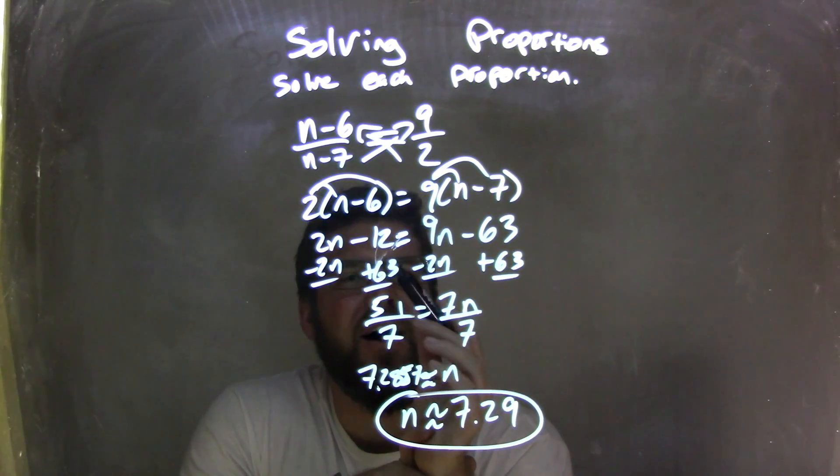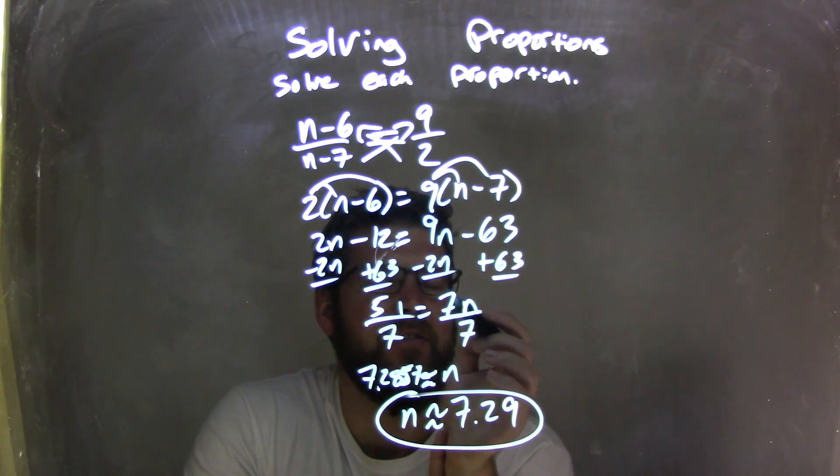Giving me negative 12 plus 63, which is a positive 51, equals 9n minus 2n, which is 7n.